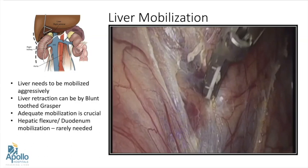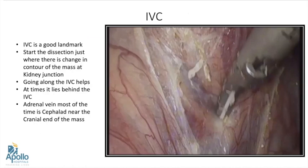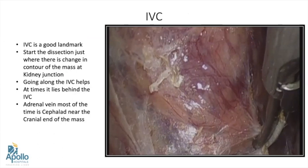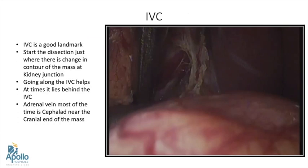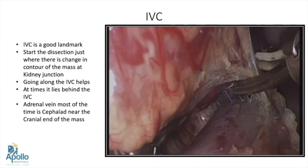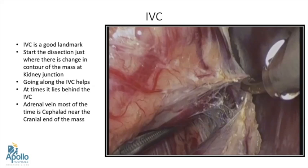We don't have to mobilize the hepatic flexure and duodenum in case of right adrenalectomy most of the time. The next step in right adrenalectomy is identification of the IVC. The IVC acts as a very good landmark. We should start our dissection where the contour changes. Once we see the IVC, we can ascend up along it. At times, we may need to push the IVC medially and push the mass to see the vessels which lie behind.